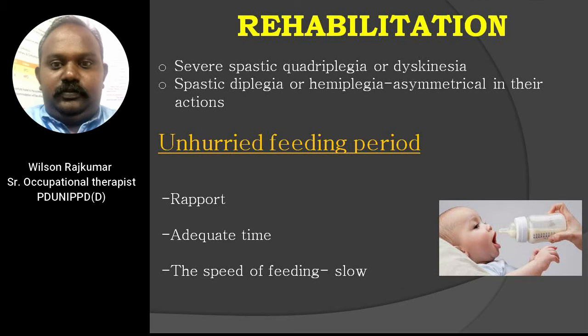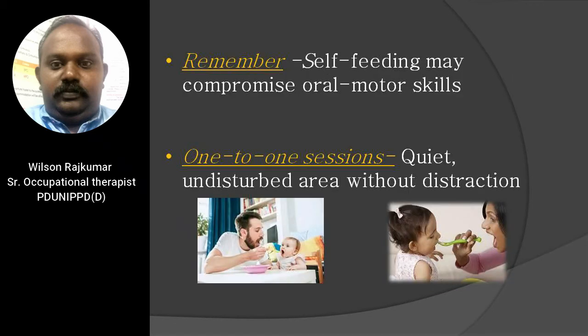Severe spastic quadriplegia and dyskinetic patients tend to have more feeding problems, while spastic hemiplegia patients may be physically able to manage feeding but are often asymmetrical in their actions. Rehabilitation should involve an unhurried feeding period: allow time for a relationship to develop between mother and child, give adequate time for the child to accept new tastes and textures, and keep the speed of feeding slow. Making demands on self-feeding may compromise oromotor skills and should not be at the expense of intake or safety. One-to-one sessions should be conducted in a quiet, undisturbed area.